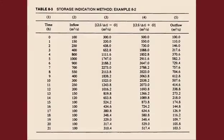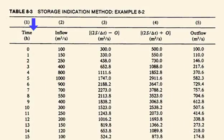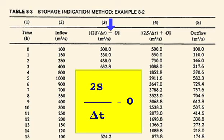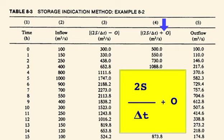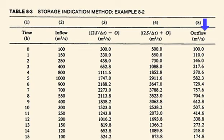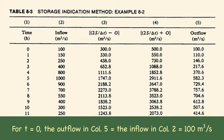The calculations are shown in the table. Column 1 shows the time in hours; column 2 shows the inflow hydrograph ordinates; column 3 shows the related variable; column 4 shows the storage indication variable; and column 5 shows the routed outflow hydrograph. For time equals 0, the initial condition is that outflow is assumed equal to the inflow — thus the outflow in column 5 equals the inflow in column 2, that is, 100 cubic meters per second.